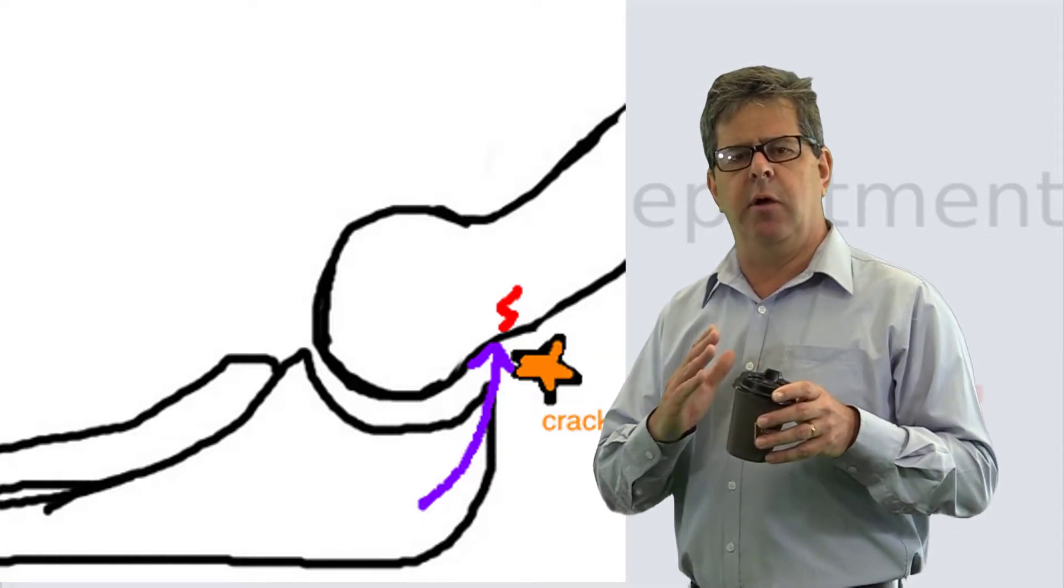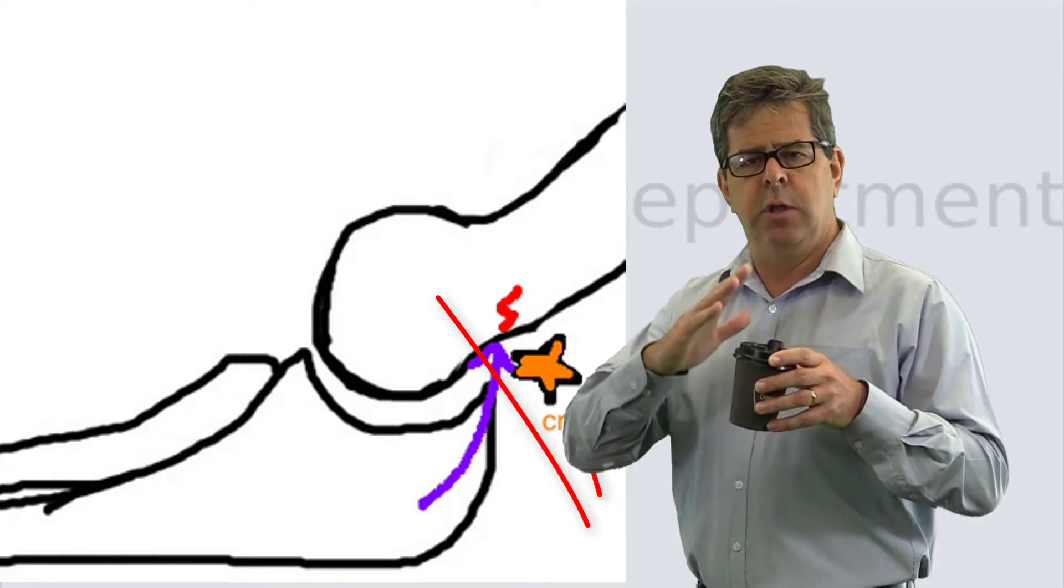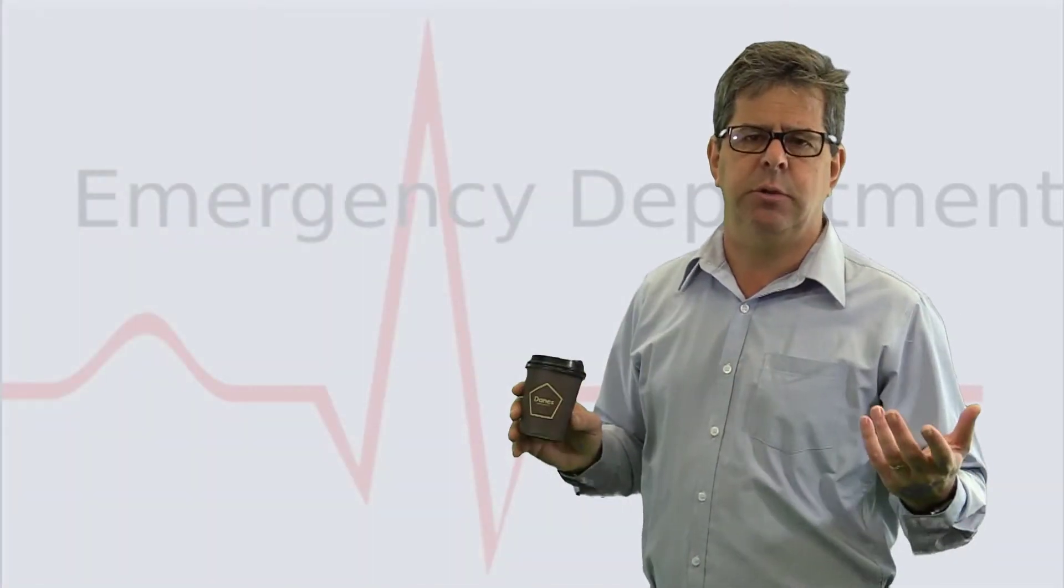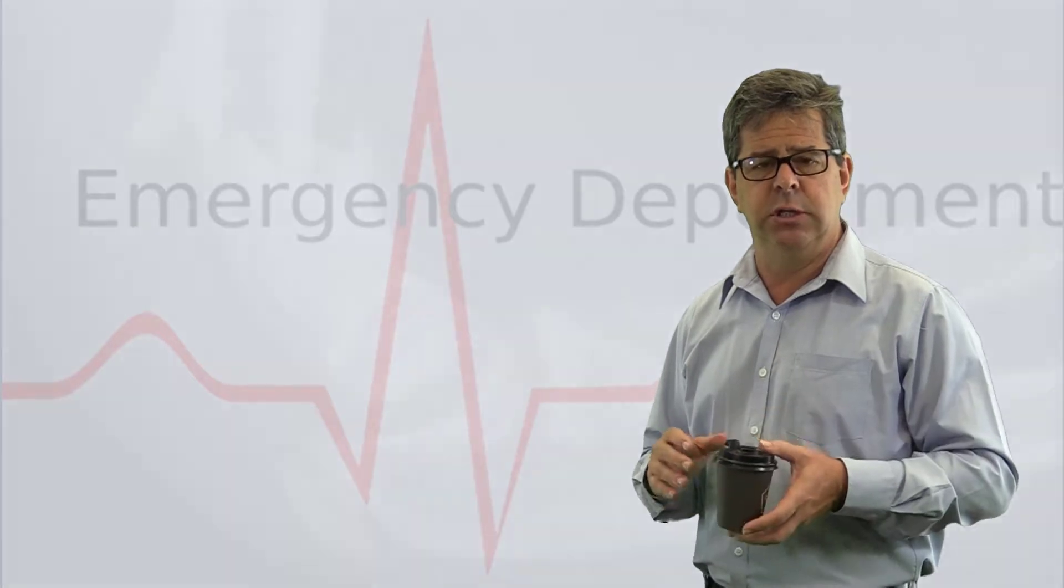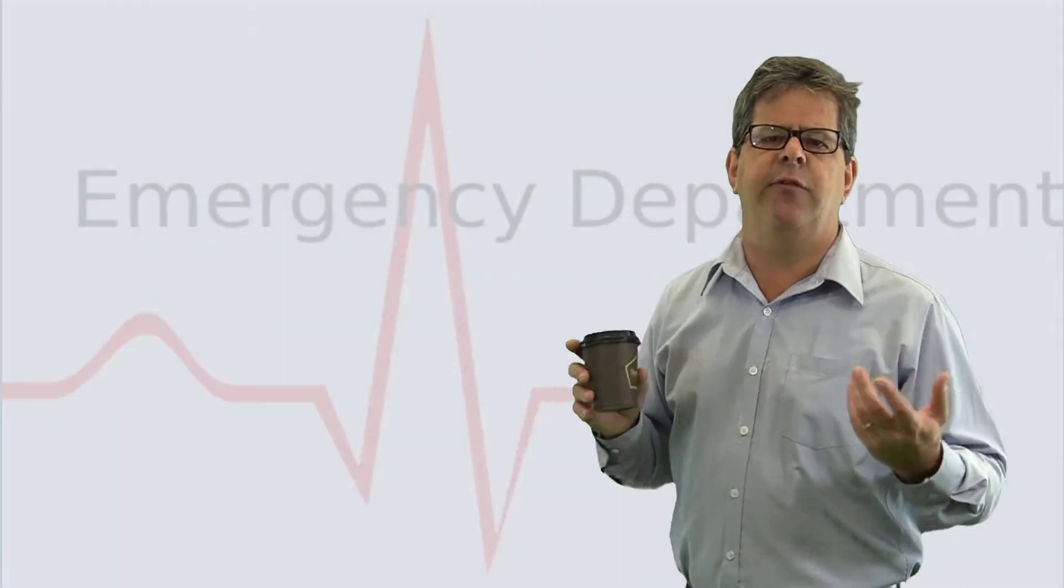Overwhelmingly what happens is that the distal area of the humerus goes posteriorly. It's called an extension injury. You can get a flexion injury when you fall on your flexed arm, but this happens only about five percent of the time in supracondylar fractures.